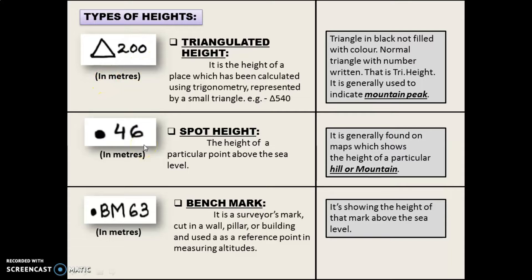The next symbol is spot height. Here we can see a black dot or black spot. It is the height of a particular point above sea level. It can be 340, 460, or any value — meaning that the height of that particular point is that number in meters above sea level. It is generally found on maps to show the height of a particular hill or mountain.